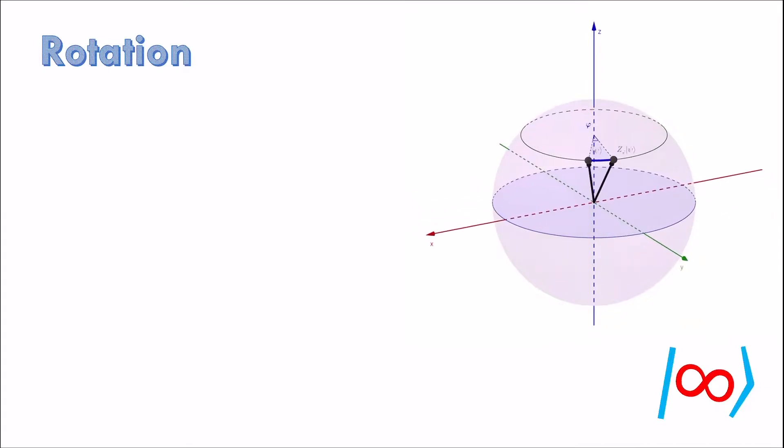For quantum Fourier transform, we'll primarily use rotations about the z-axis. The gate Z_phi represents rotation by angle phi about the z-axis. Action of any gate can be fully specified by giving the action of the gate on the computational basis. Z_phi keeps state 0 unchanged, but multiplies the state 1 by a phase factor e to the power i phi. As a matrix, we represent this gate as follows.